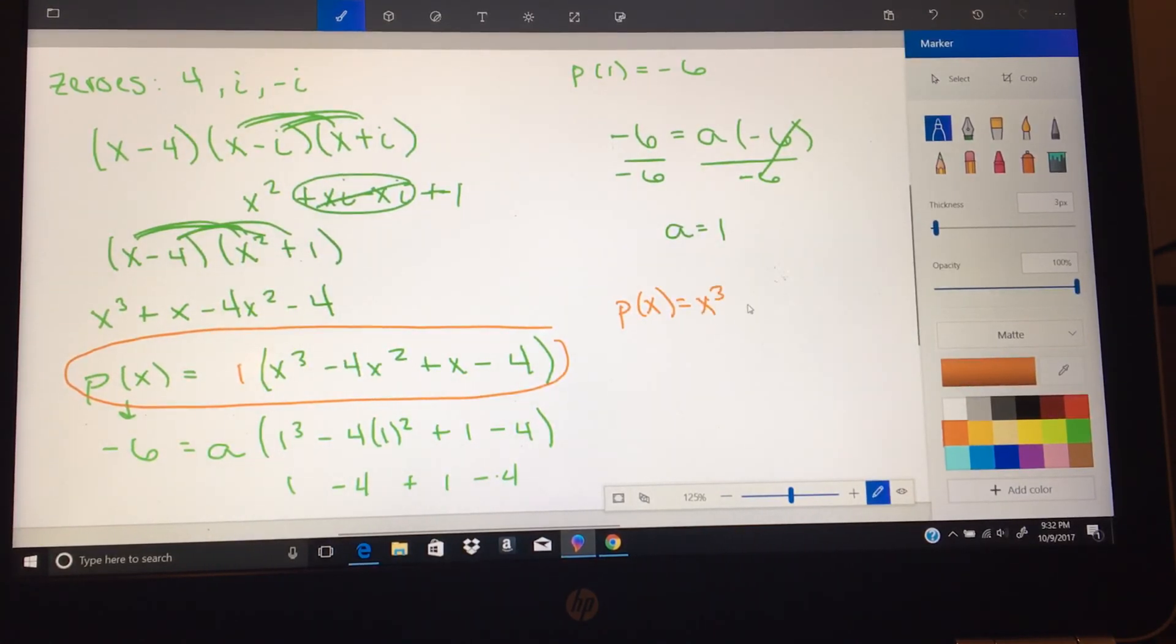that distributes so it's the same thing. So my function is actually just p of x equals 1 times x cubed, x cubed, 1 times negative 4x squared, negative 4x squared, 1 times x, x, and 1 times negative 4, negative 4.